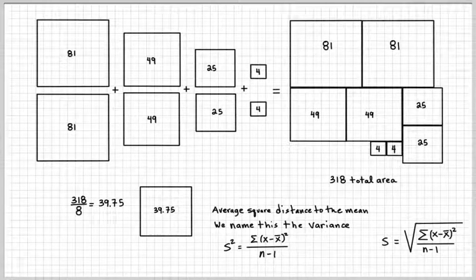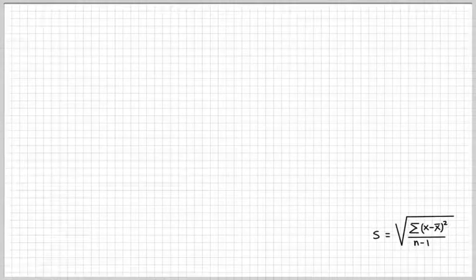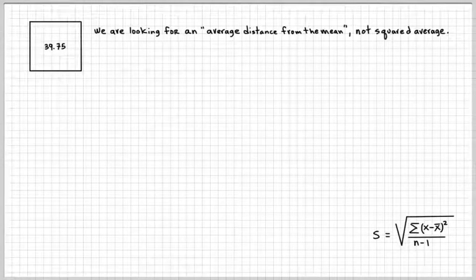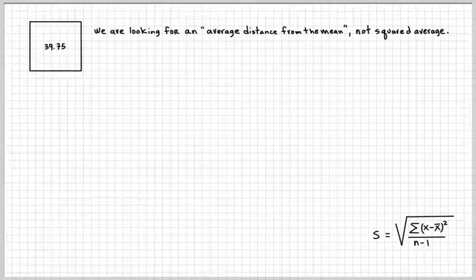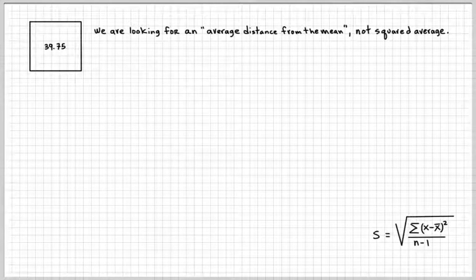Average distance, what does that mean? Average distance is the spread of the data, the variation of the data, how consistent the data is, and so forth. So we're looking for an average distance from the mean, not a squared average.